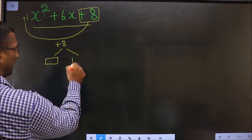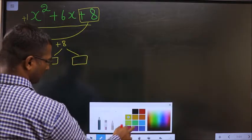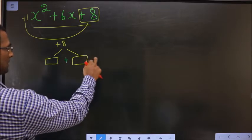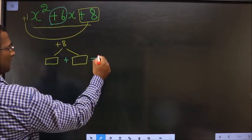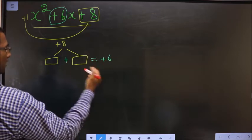Such that when you add the two numbers, you should get this middle number, that is +6, and also when you multiply these two numbers, you should get +8.